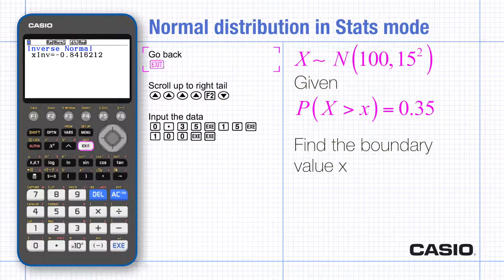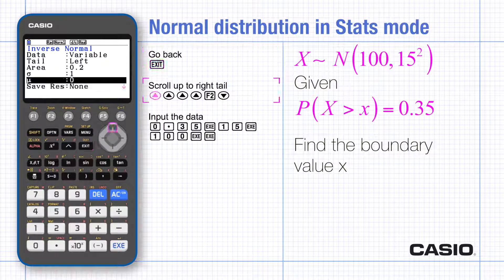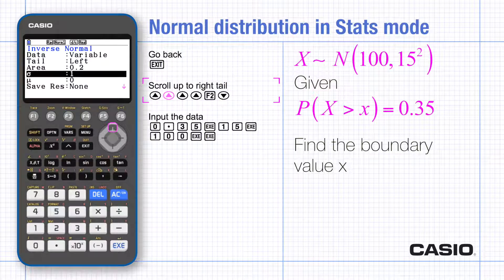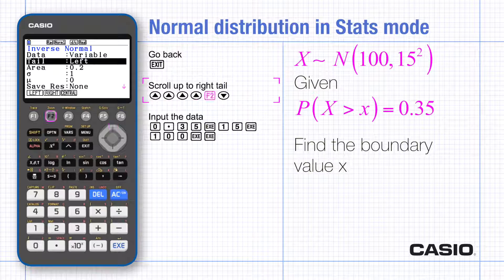Press exit to go to the previous screen and scroll up to choose right tail. Input the area at 0.35,